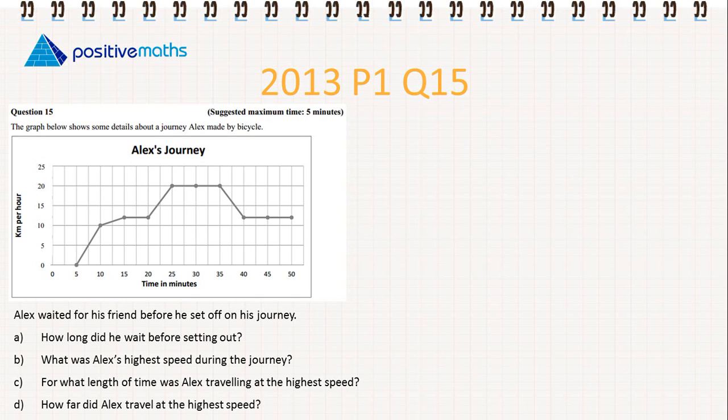The graph below shows some details about a journey Alex made by bicycle. So just to note, we have the time on the x-axis, and we have the kilometers per hour, so we have the speed on the y-axis.